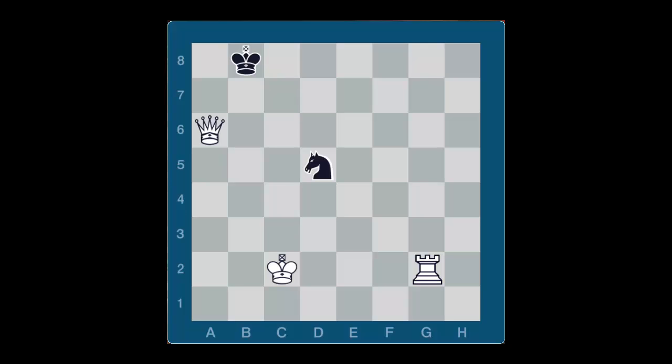What is black's best move here? We see that black has two possible forks. Play the best one. Good job! Knight f4 check wins the queen. When deciding between two possible forks, always go for the most valuable pieces.